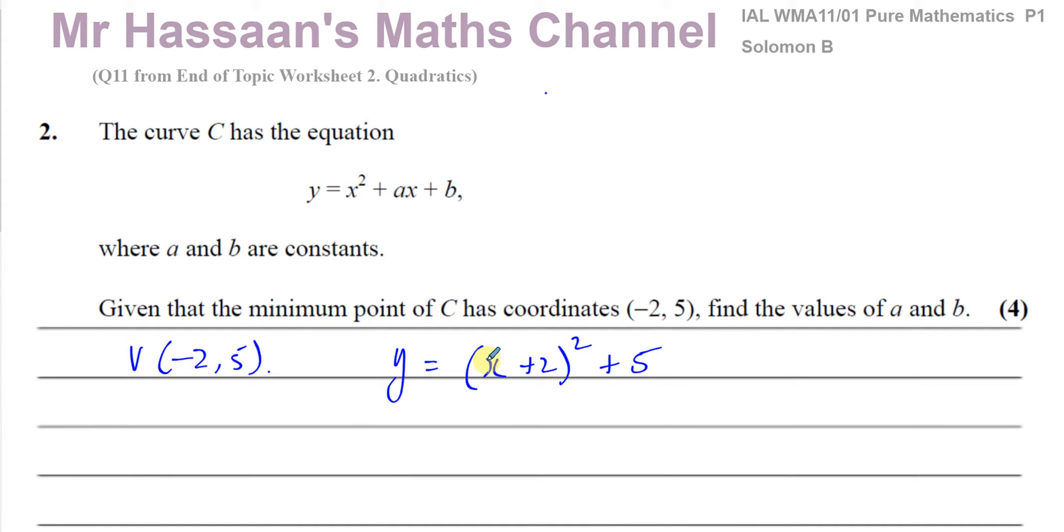So this is the lowest point that this can ever reach, which is going to be 5. The lowest point you'll ever reach on the y-axis will be 5, and that's when x is minus 2.